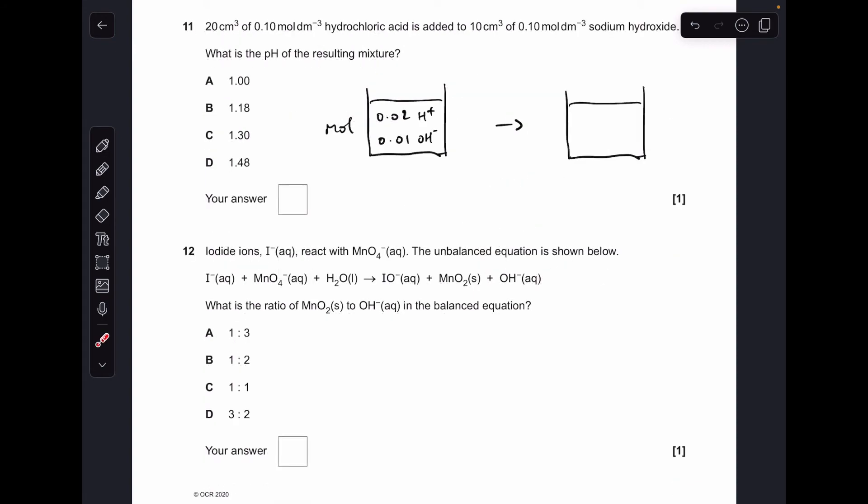Number 11. So all I've done is in the beaker here, this is just representing the beaker that this has taken place in. We've got 20 cm³ of that concentration of HCl, so concentration times volume means that many moles of H+. And concentration times volume of the NaOH means that many moles of OH-. So you can see the H+ is in excess. 0.01 moles of H+ will react away, so that means at the end of the reaction you're going to be left with 0.01 moles of H+.